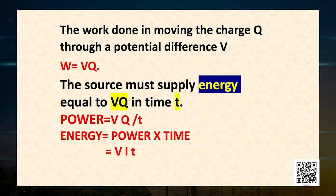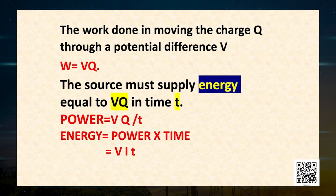Let T be the time during which a charge Q flows across. The work done in moving a charge Q through a potential difference V is given by V into Q. Please remember this — the work done is given by V into Q. Therefore, the source must supply energy equal to VQ in time T.